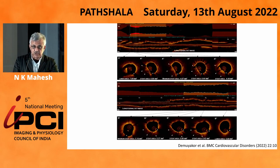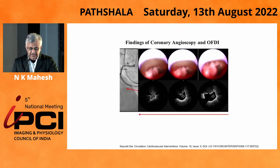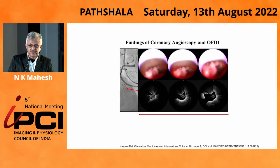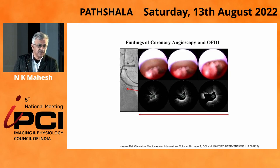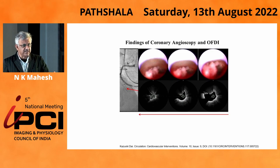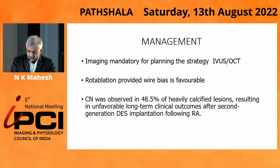IVUS and OCT have been competing with each other. Now the new modality is coronary angioscopy, where the calcific nodule looks like a cauliflower. So far, no clear articles define how to characterize it with angioscopy.